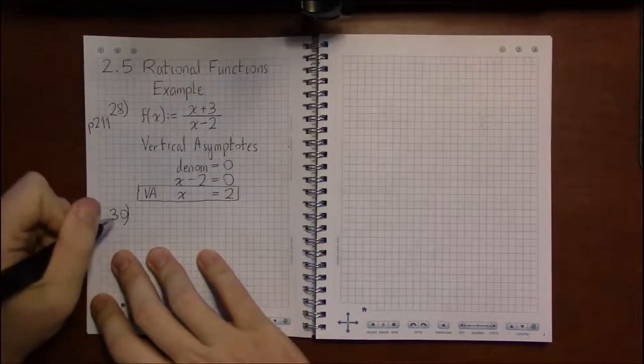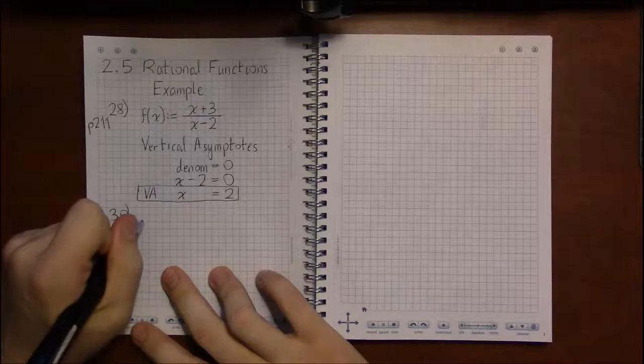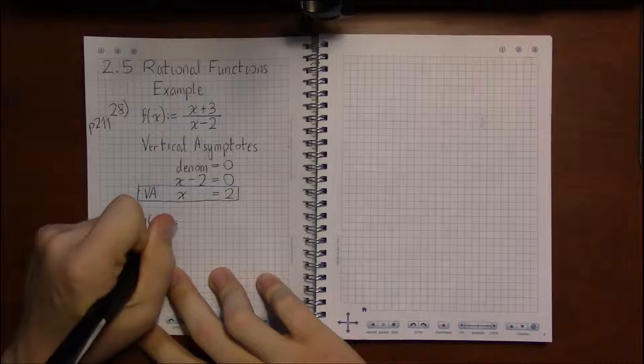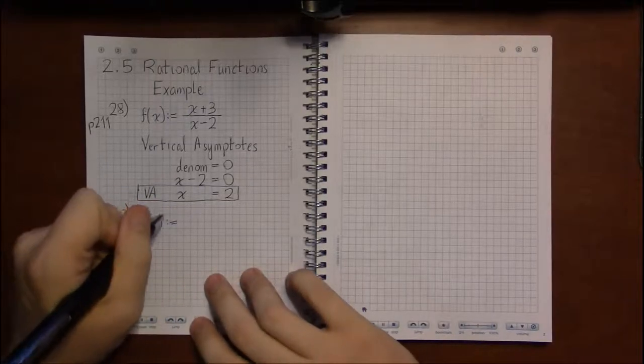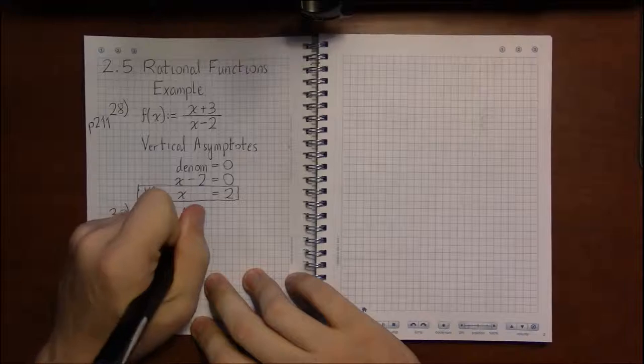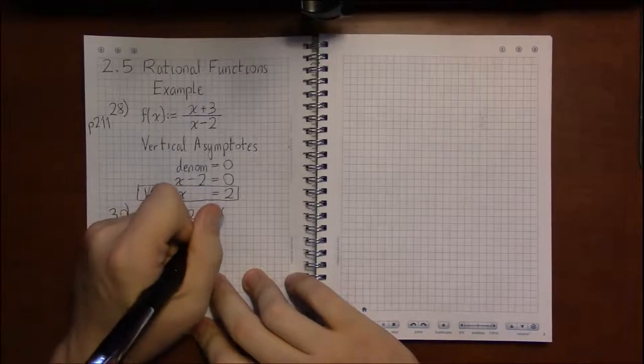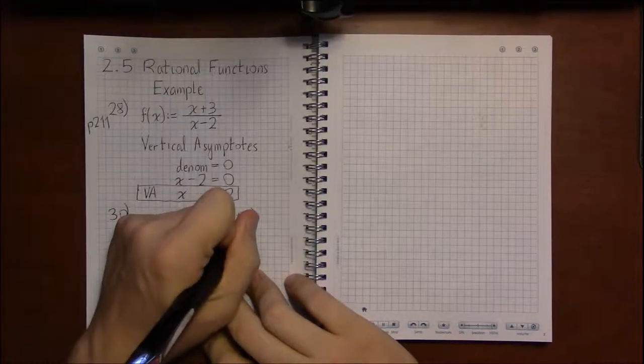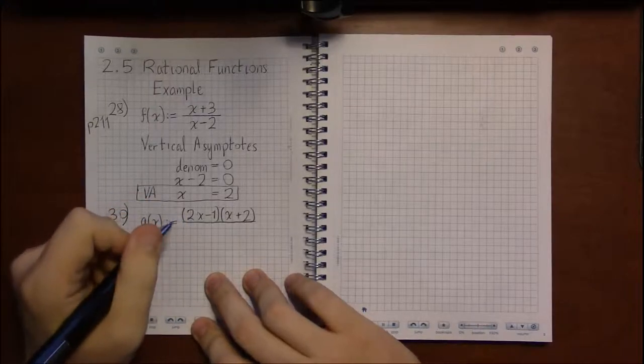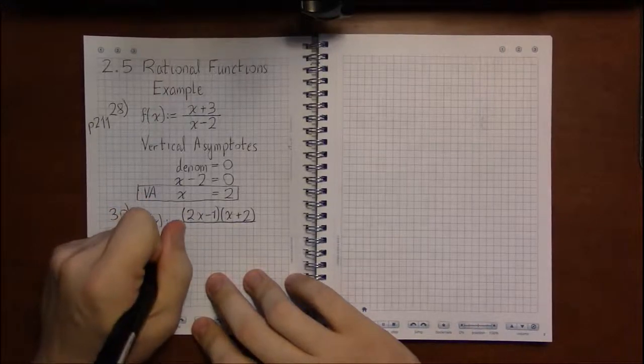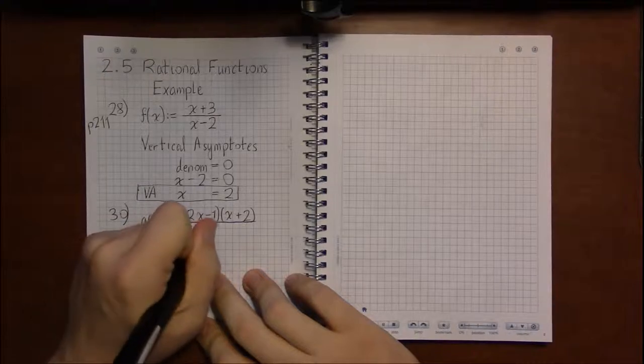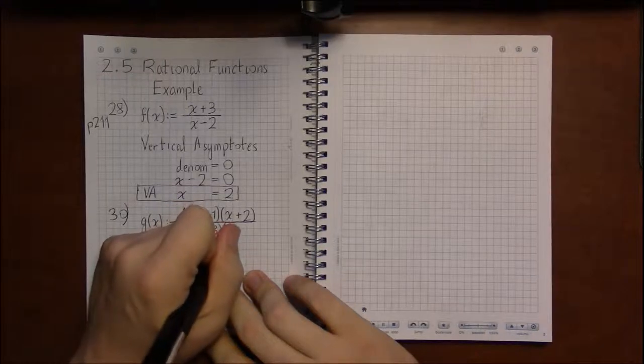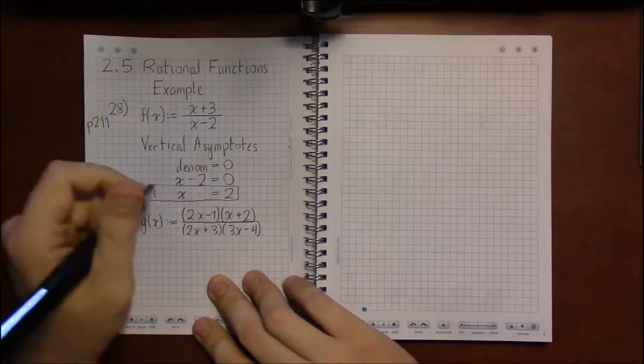Let's take a look at problem 30, where we're given g of x to be the following function: parenthesis 2x minus 1 times x plus 2, and then all of that is over, sitting atop of, 2x plus 3, times 3x minus 4.